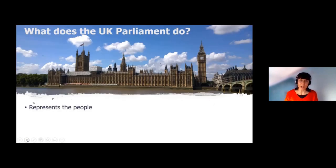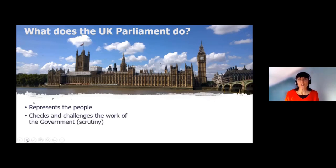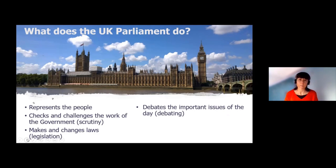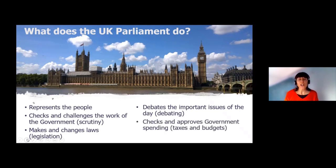What does Parliament do? It represents the people — it's where our MPs go to represent the constituencies for which they've been elected. It checks and challenges the work of government, so scrutiny processes, and quite a bit of what we talk about this afternoon will be about those scrutiny processes. It makes and changes laws, so legislation. It debates the most important issues of the day, so it's where MPs and members of the House of Lords can bring issues for debate and to get a response from the government. And it checks and approves government spending — the government needs to get tax and budget proposals approved by Parliament before those can be enacted.